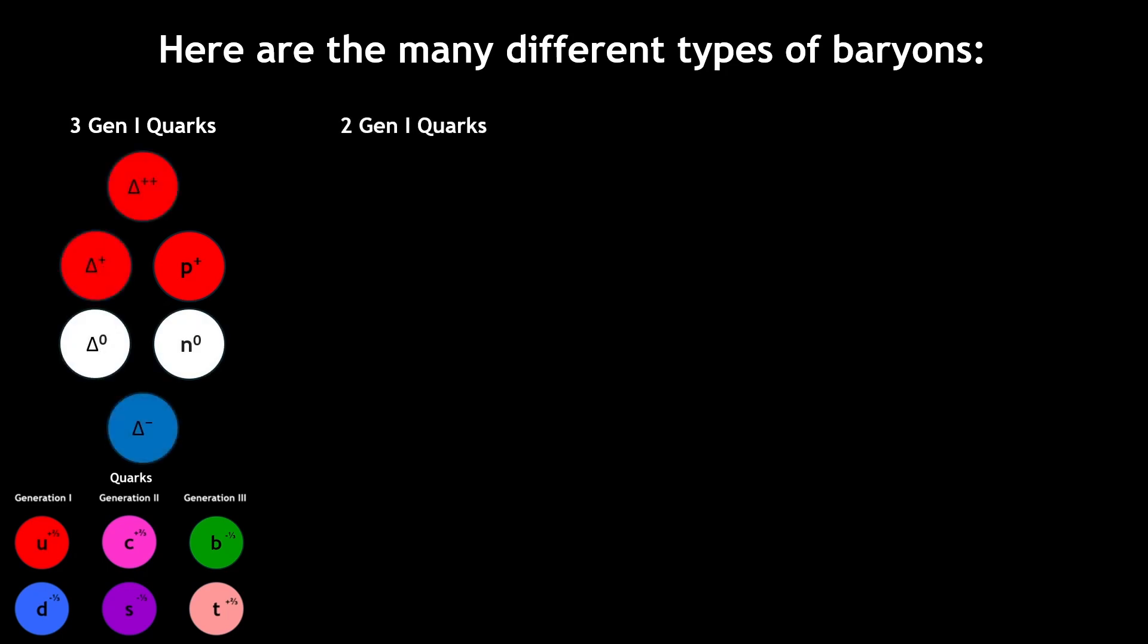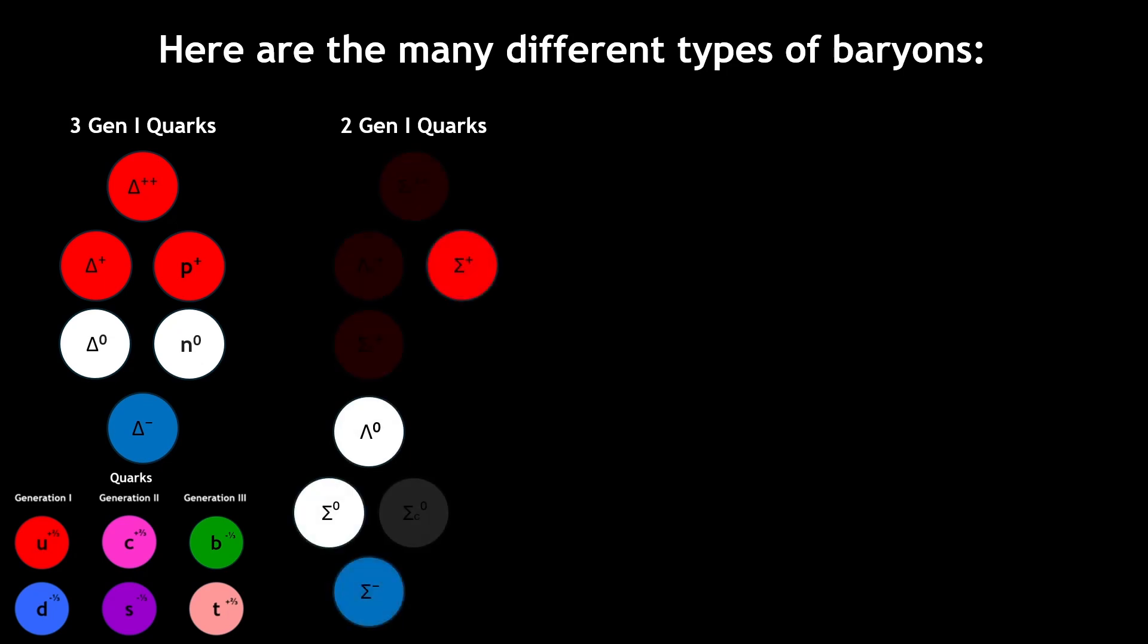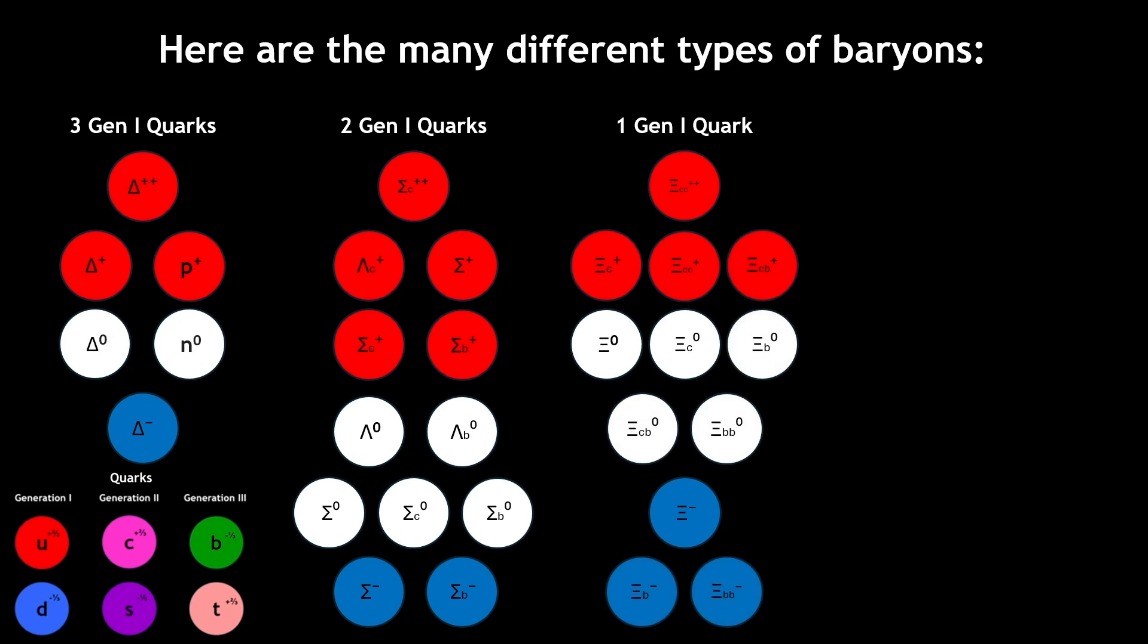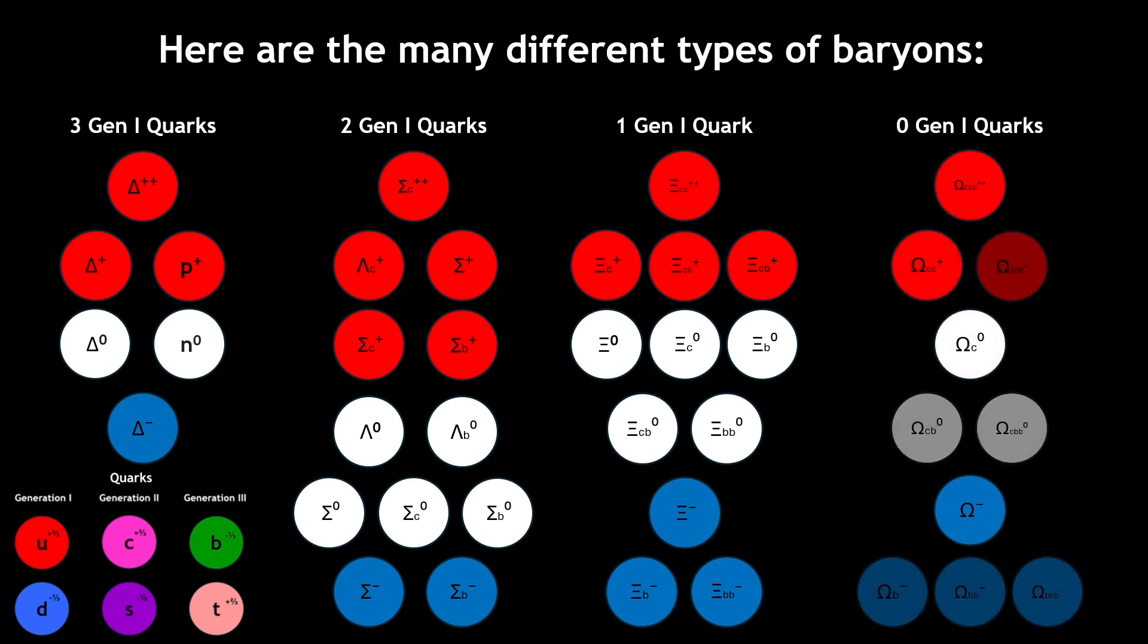Baryons with two first-generation fermions are lambda baryons and sigma baryons, along with their charmed and bottomed variants. Baryons with one first-generation fermion are xi baryons, with their respective charmed and bottomed variants. Lastly, baryons with no first-generation fermions are called omega baryons, with their charmed and bottomed variants.